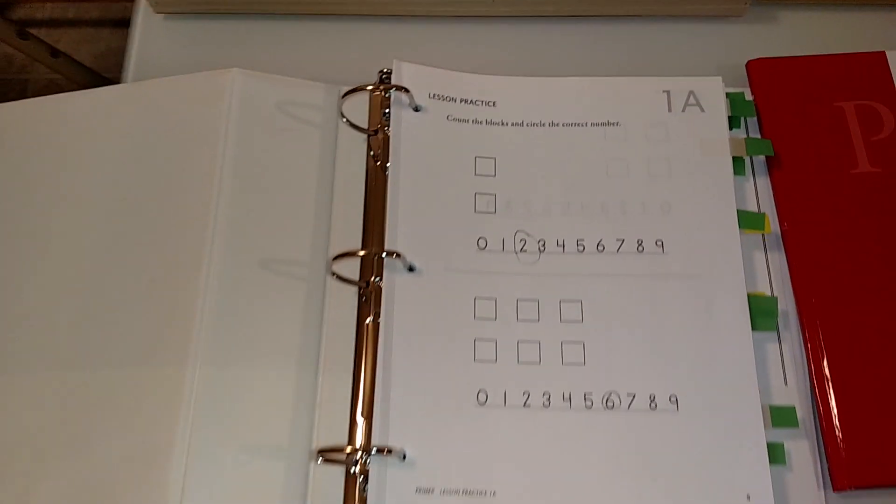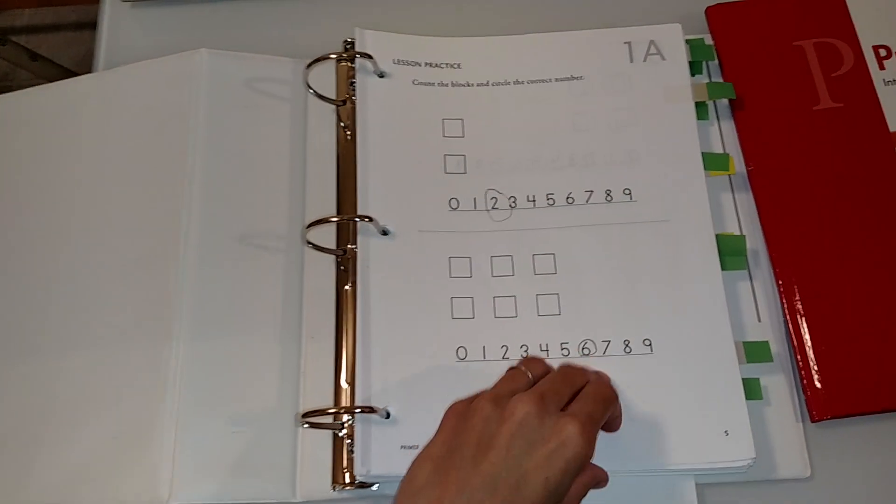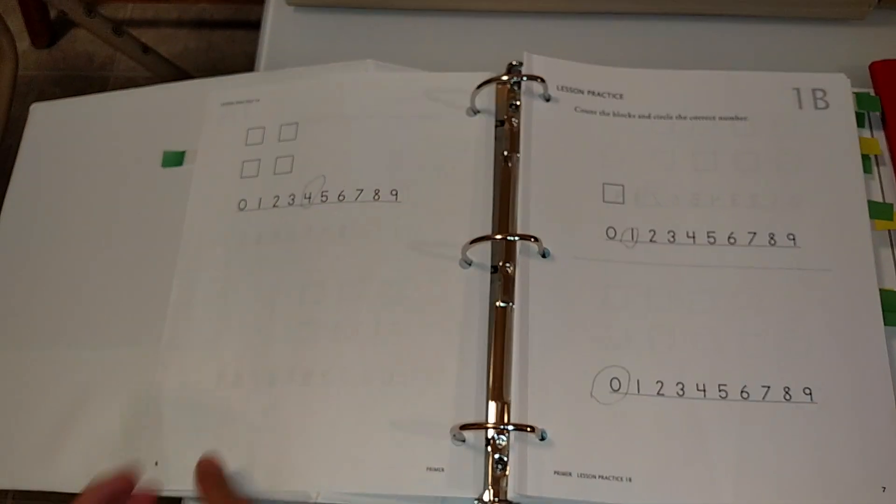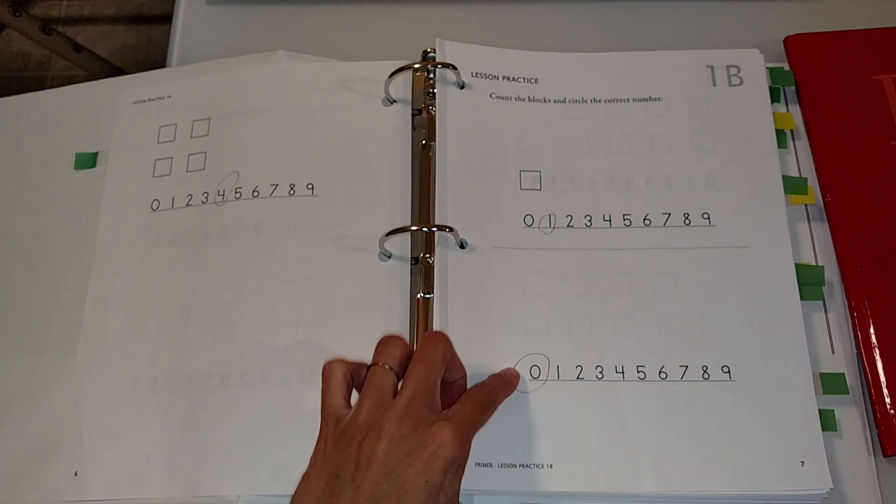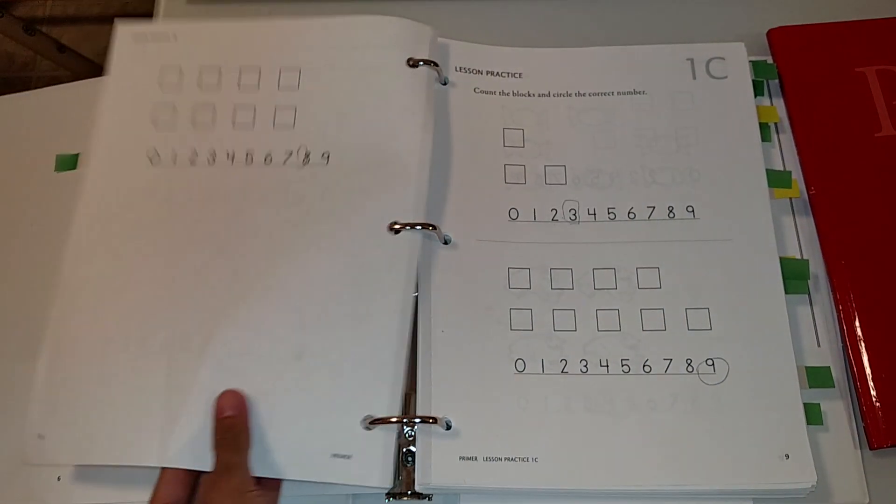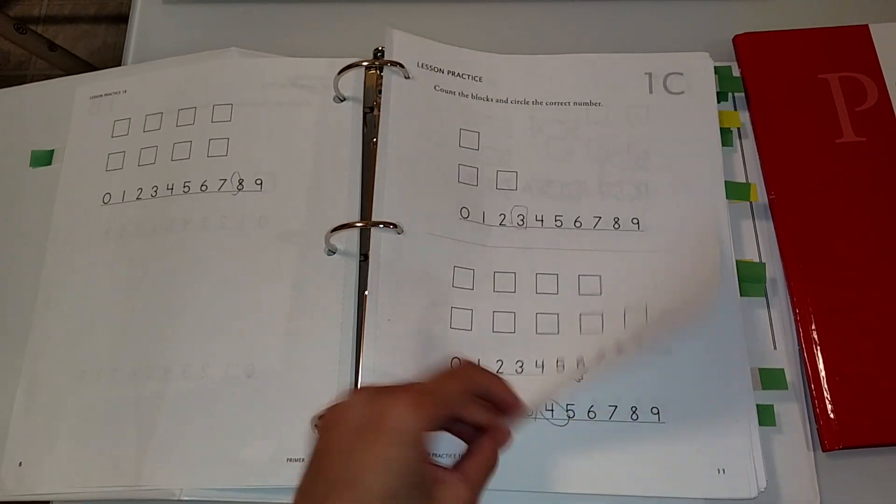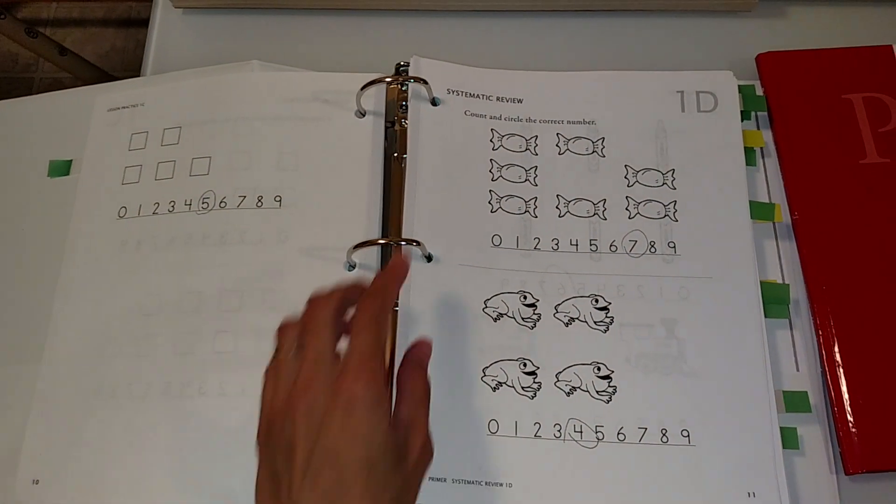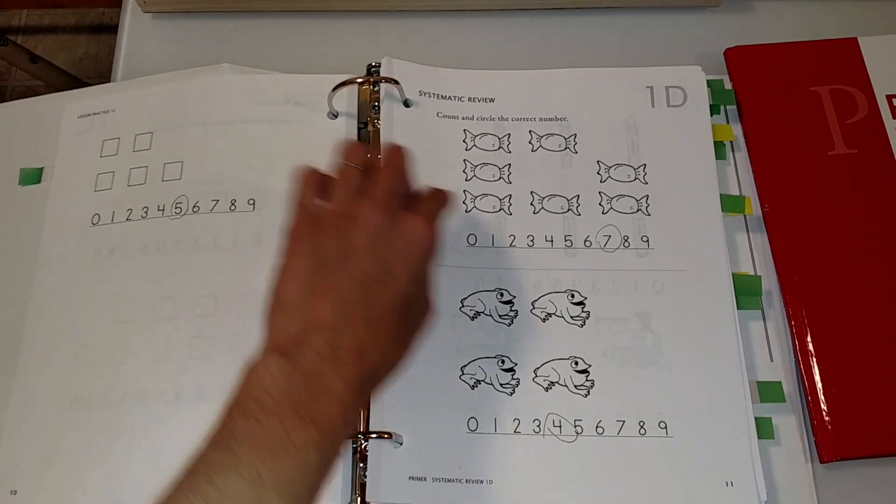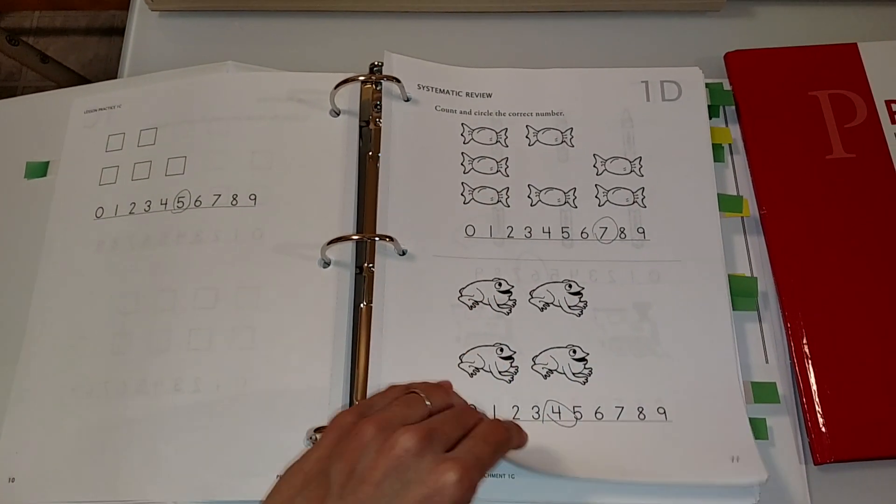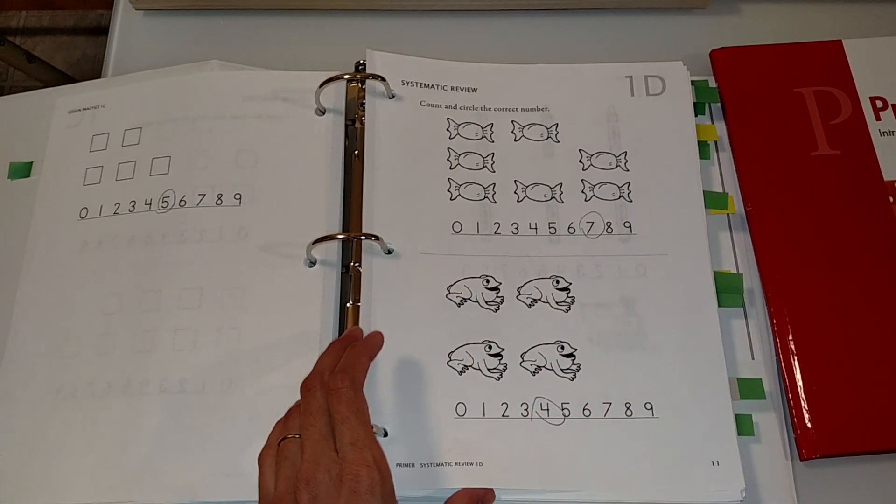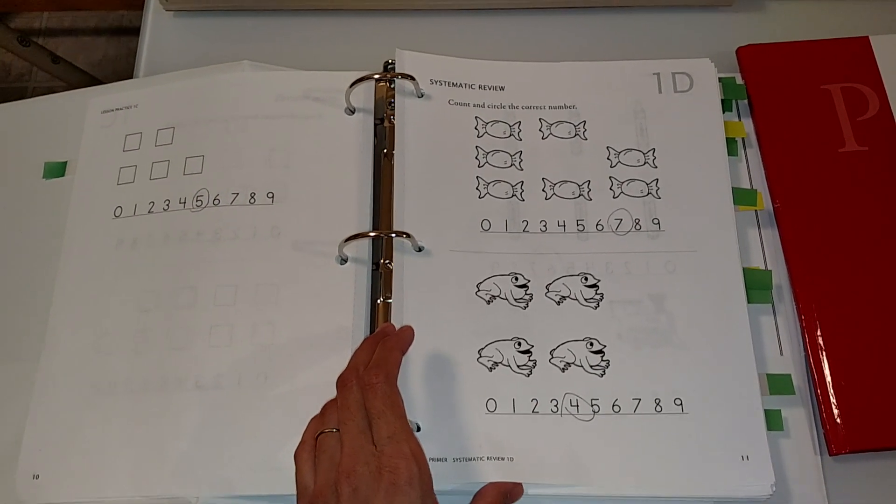So they go on and it starts off really really easy. They place the blocks and write down the answer and it does introduce the concept of zero right from the start which is really important. It goes on. They can practice their counting and then circling. It doesn't require any writing at all at first. Just circling and using the manipulatives.